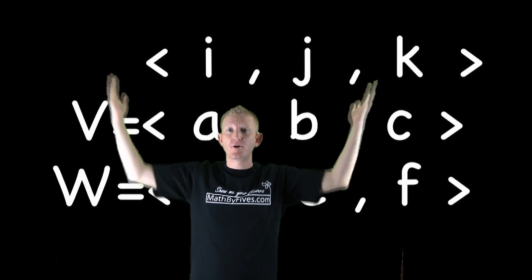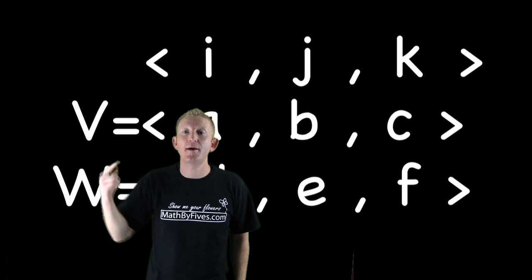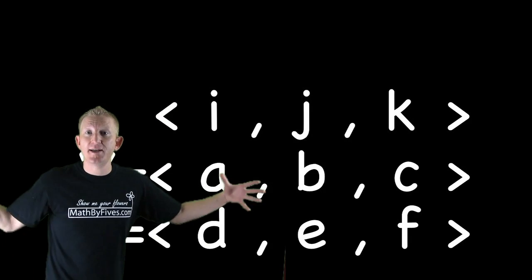If we're doing v cross w, that works. Okay. That means v needs to be on top of w, and here's what it looks like. It looks like this. When I'm doing my cross products, I'm expanding the minors.